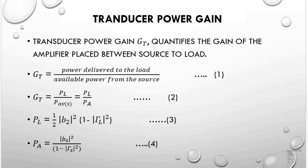P_average is the power input to the transducer. PL equals (1/2) |b2|² into (1 minus |gamma_L|²). P_available from the source, PA, equals |bs|² divided by (1 minus |gamma_s|²), where bs is the source wave and gamma_s is the source reflection coefficient.